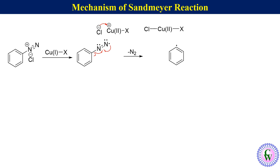Chloride ion attaches to copper-2 and nitrogen gas is eliminated to produce a copper-2 salt with chloro and X, and a phenyl radical. Then homolytic cleavage of the copper-2–X bond and joining of X with the phenyl radical eliminates copper-1 chloride to produce chloro, bromo, or cyanobenzene.